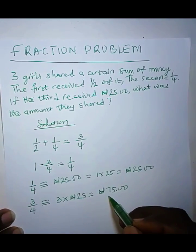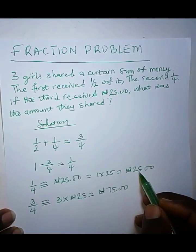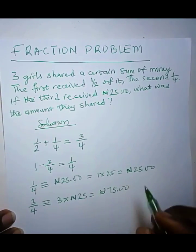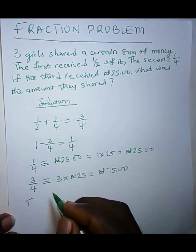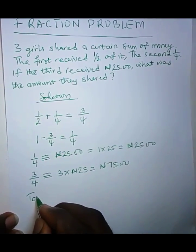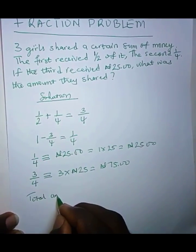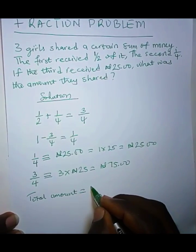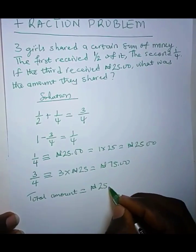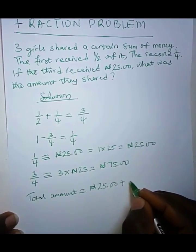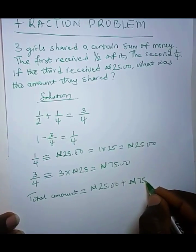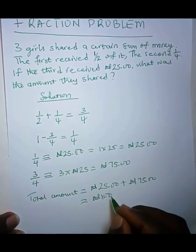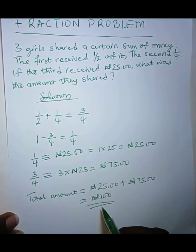So since we have the other share, one of the shares is 25 Naira and the other share or the other part is 75 Naira, that means that the total amount shared will be 25 Naira plus 75 Naira, and that would be a total of 100 Naira. So that's the solution to this problem.